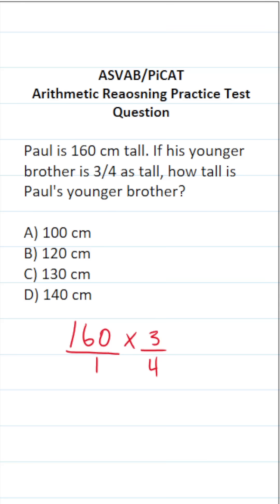More specifically, I can say 4 goes into 4 one time. 4 goes into 16 four times, so it goes into 160 40 times. This becomes 40 over 1, which is just 40, times 3 over 1, which is just 3.